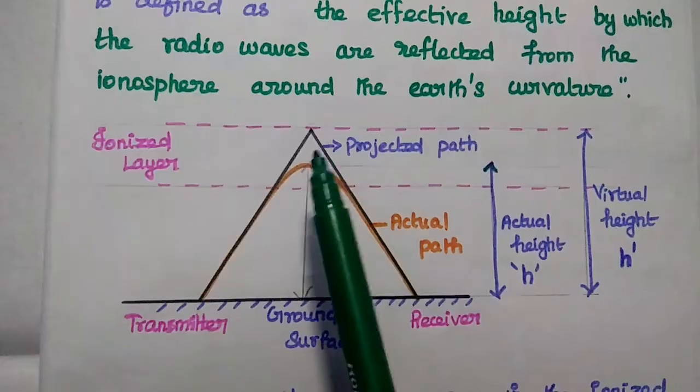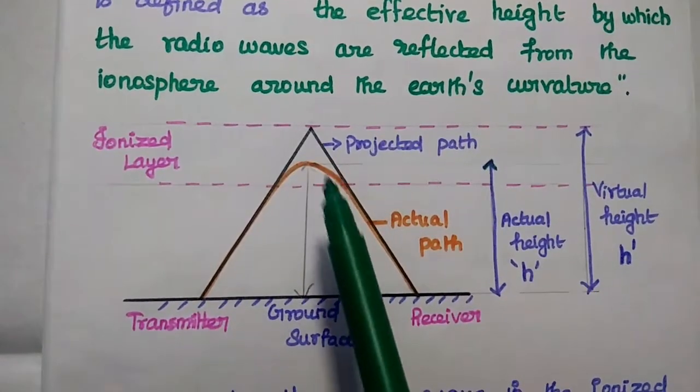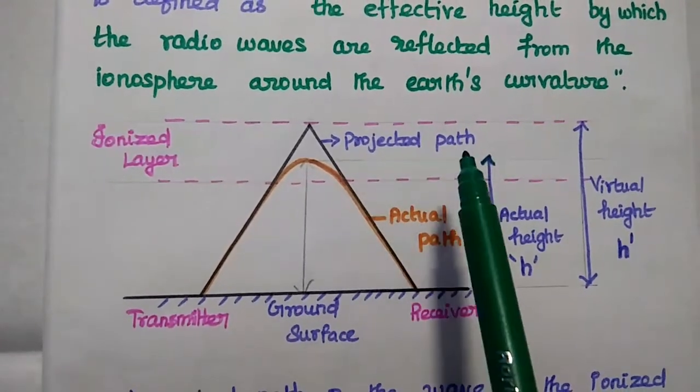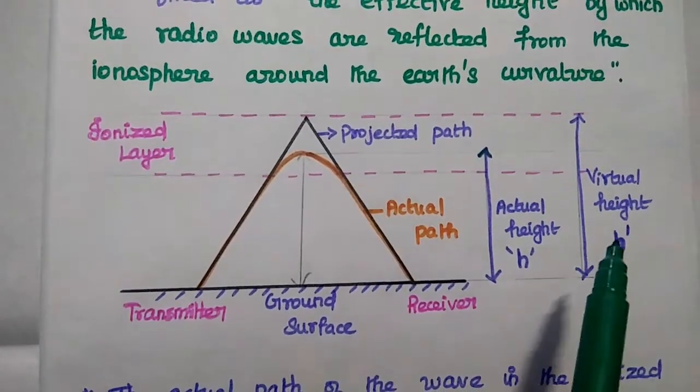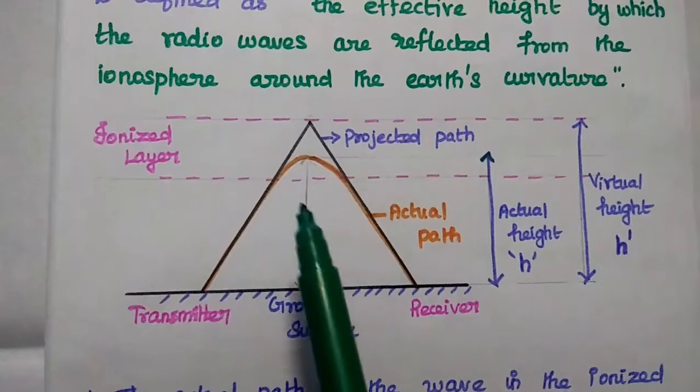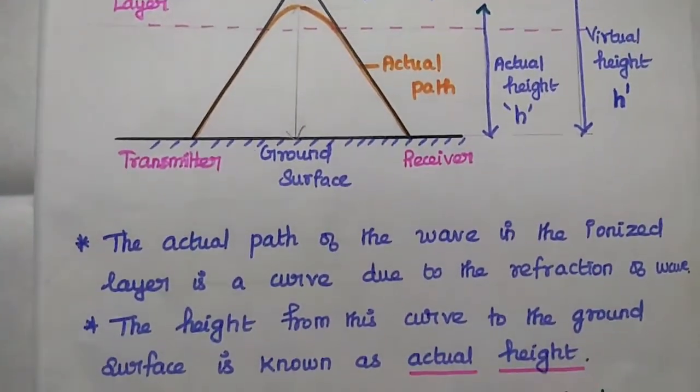For that, we can take this projected path which is having the sharp reflection. So this one is the projected path to which we can calculate the virtual height. Virtual height is nothing but the height between the surface and then projected path.